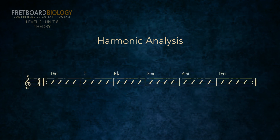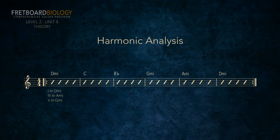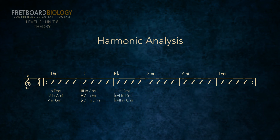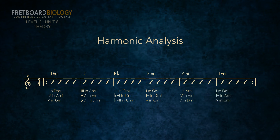Let's do another progression with five chords: D minor, C major, B flat major, G minor, A minor, and ending on D minor again. It's a pretty good bet this is going to be in D minor because of the last chord, but let's go through the process. D minor could be the 1 chord in D minor, the 4 chord in A minor, or the 5 chord in G minor. C major could be the flat 3 chord in A minor, the flat 6 chord in E minor, or the flat 7 chord in D minor. B flat major could be the flat 3 chord in G minor, the flat 6 chord in D minor, or the flat 7 chord in C minor. G minor could be the 4 chord in D minor. A minor could be the 1 chord in A minor, 4 chord in E minor, or the 5 chord in D minor. And the last D minor could be the 1 chord in D minor, 4 chord in A minor, or 5 chord in G minor.